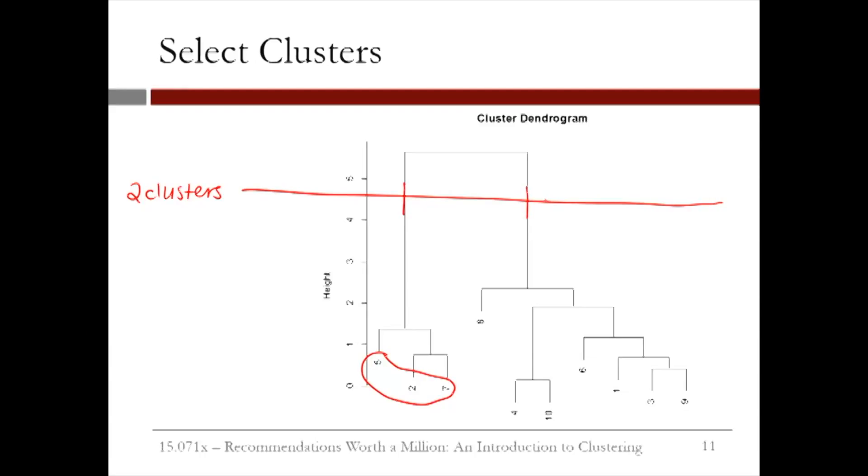The farthest this horizontal line can move up and down in the dendrogram without hitting one of the horizontal lines of the dendrogram, the better that choice of the number of clusters is. If we instead selected three clusters, this line can't move as far up and down without hitting horizontal lines in the dendrogram. This probably means that the two cluster choice is better.